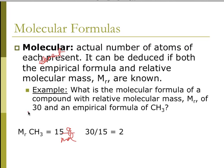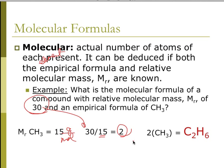So, the relative molecular mass divided by the empirical molecular weight tells me that there are 2 empirical formulas within the molecular formula. So 2 times that means it is C2H6.